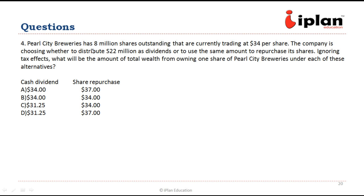Question four: the company has 8 million shares outstanding and a current share price of $34. The company is planning to distribute $22 million as dividend, either through cash or through repurchase of shares. Ignoring tax effects, what will be the total wealth from owning one share? We have observed that shareholder wealth will not change due to dividend or share repurchase — it should remain the same at $34 per share. So B is the right answer.